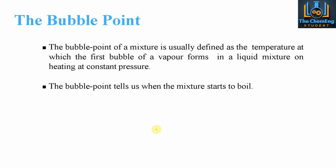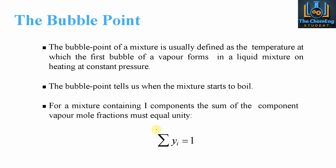The bubble point essentially tells us at what temperature the mixture will begin to boil — any temperature above that point will have some form of vapour, and any temperature below that point we will have complete saturated liquid. For a mixture containing I number of components, regardless of how many you have, the summation of each of the vapour mole fractions must be equal to 1. We can prove that using the example with the four different components A, B, C, and D.